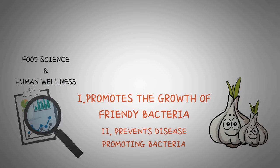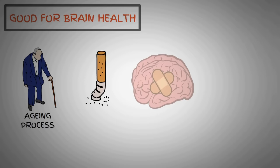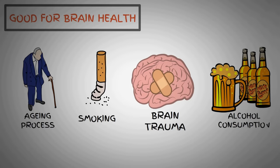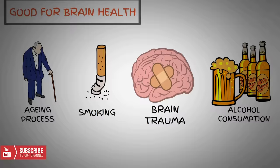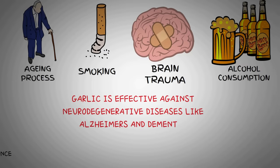Garlic is good for brain health. Environmental stress could include the aging process, smoking, pollution, traumatic brain injury or excessive alcohol consumption. Oxidative damage from free radicals that are produced in our body contributes to the aging process. Garlic has potent antioxidant and anti-inflammatory properties so it promotes brain health. The combined effects of reduced cholesterol and blood pressure and having significant antioxidant properties, garlic is effective against neurodegenerative diseases like Alzheimer's disease and dementia.